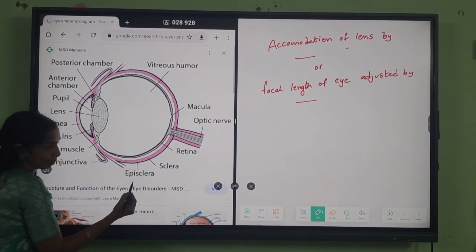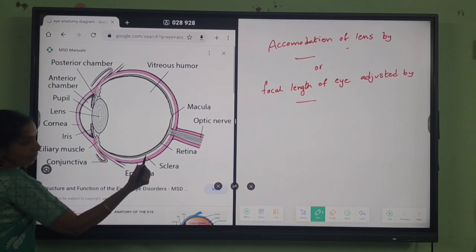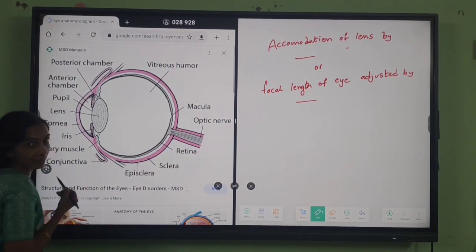So sclera outermost, choroid middle layer, retina innermost layer.